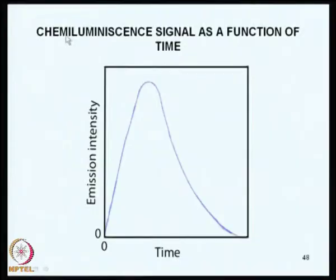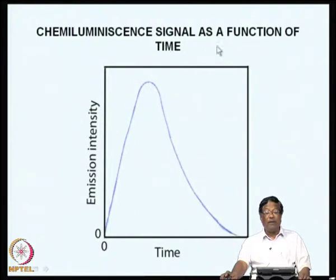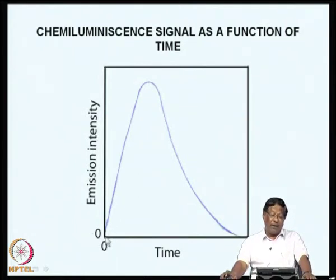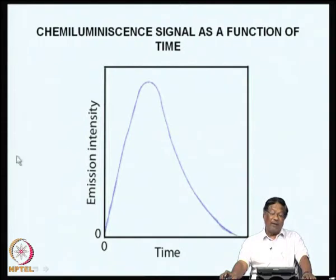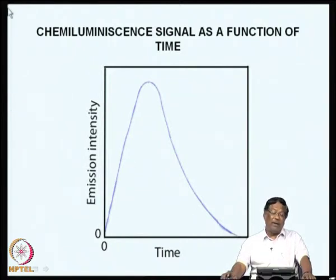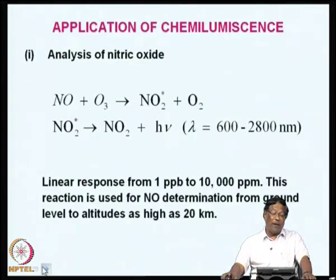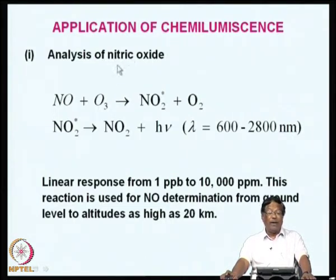Here I am showing a figure of chemiluminescence signal as a function of time, with the axes being time and emission intensity. You can see that as reactants mix and react, producing C*, the signal reaches a maximum and then decreases exponentially as the reaction goes to completion. You can measure either peak height or the peak area defined by integration between two time limits. The theory and applications are simple, but the beauty is that they can be used for parts-per-billion level analysis.